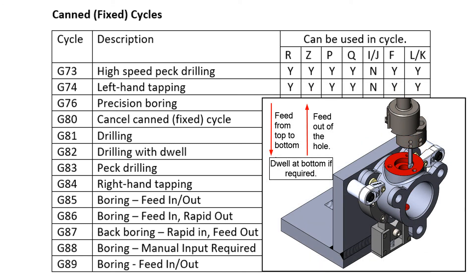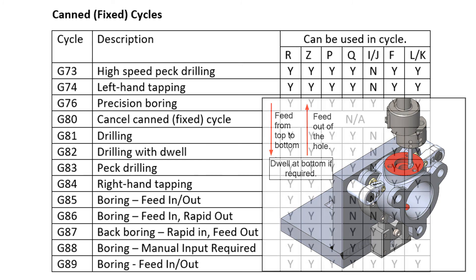The G89 cycle is the same as the G85 in that the tool feeds in and out of the hole, however it will allow the tool to dwell at the bottom of the hole.